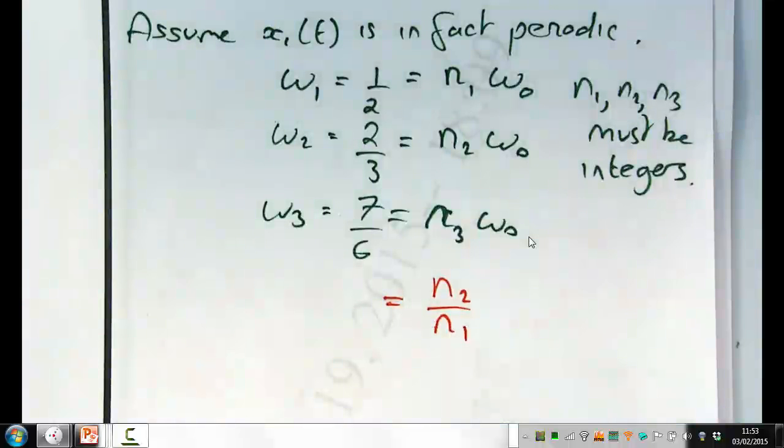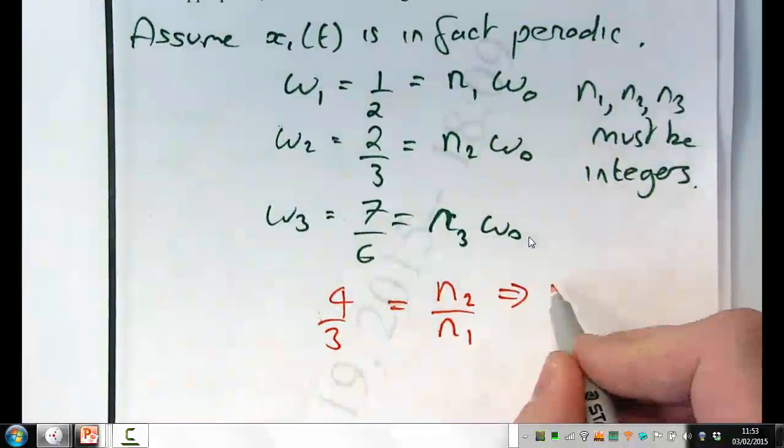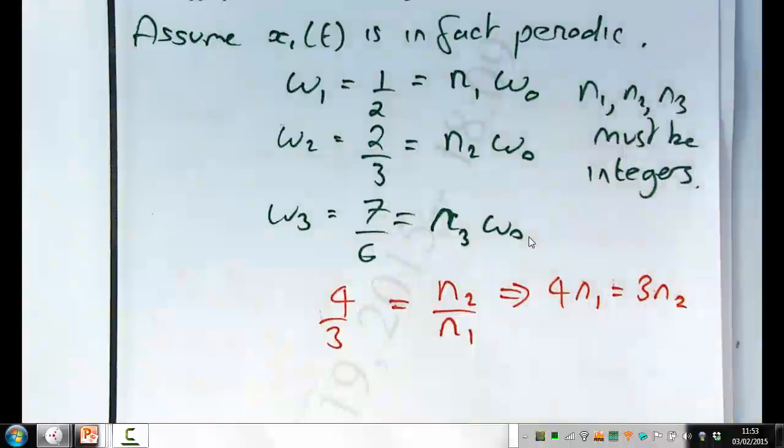So I'd do n2 divided by n1 is two thirds divided by a half, which means to be four thirds. Or in other words, four times n1 is three times n2. So my first guess for what n1 and n2 could be is that I think the lowest common divisor to make that true is that n1 is three and n2 is four. Because then you'll give twelve is twelve. And I don't think there are any smaller integers that satisfy that equation. Does that make sense?